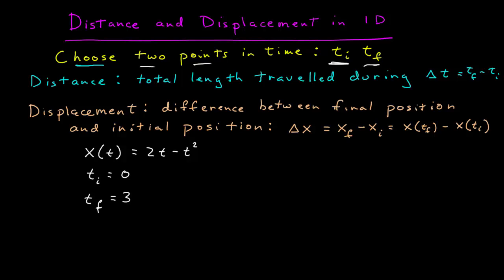Once you've chosen two points in time you can define the distance, which is the total length traveled during that time interval, the final time minus the initial time. So that's the distance.